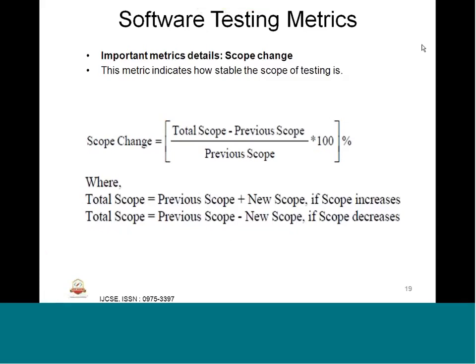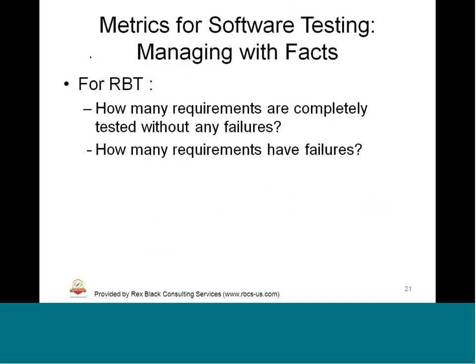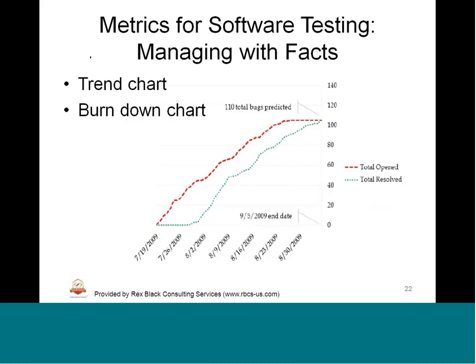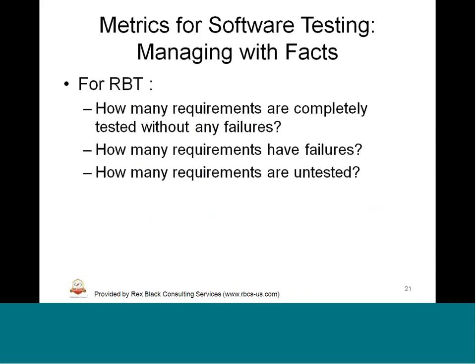So that is what software testing metrics is about. In the next session we will try to conclude about the automation test matrix and how to manage and report it, what the trends are, burn down charts, and with that we will try to complete unit 3 in the next lecture.